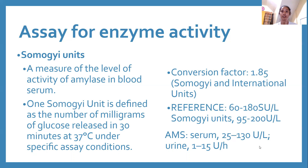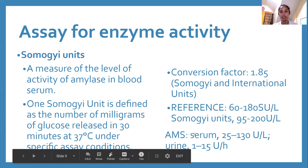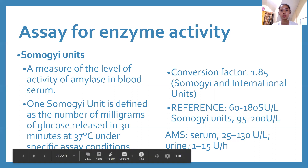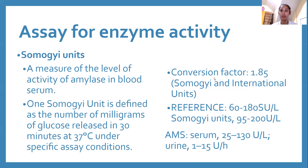The reference range for amylase is 60 to 180 Somogyi units. Amylase in serum is 25 to 130 international units, and in urine is 1 to 15 international units. According to Bishop, the conversion factor between Somogyi and international units is 1.85.